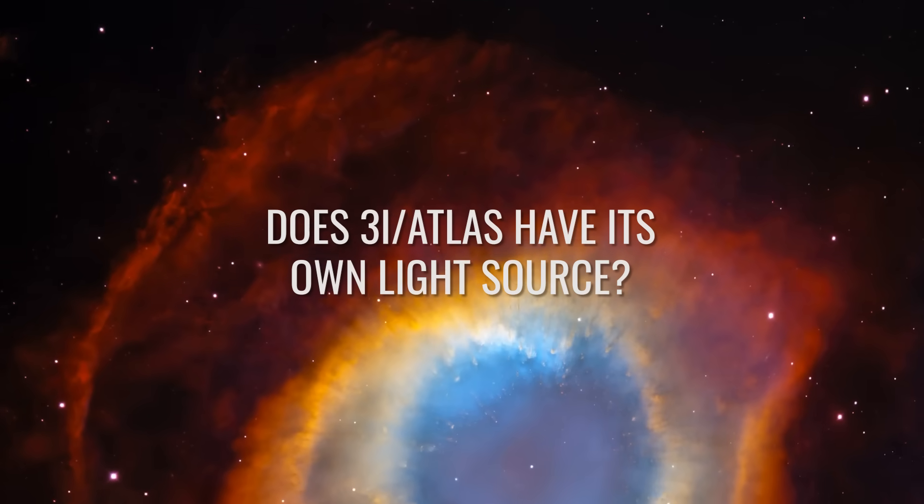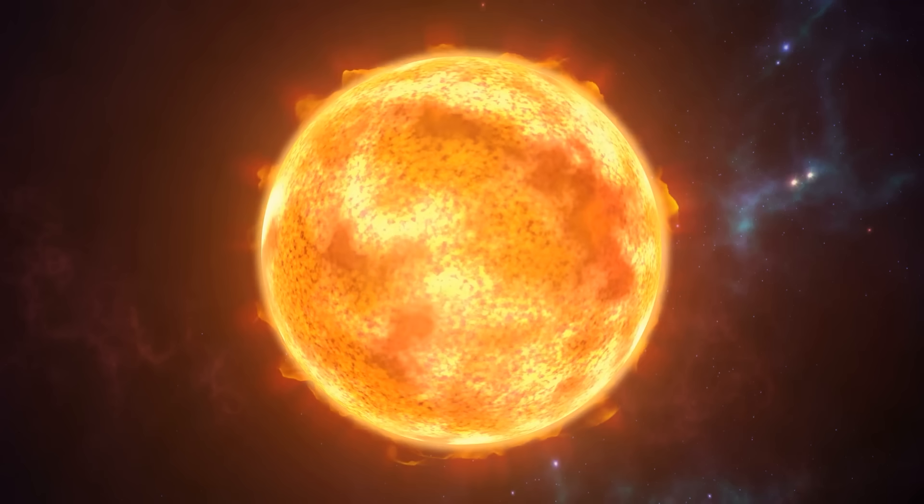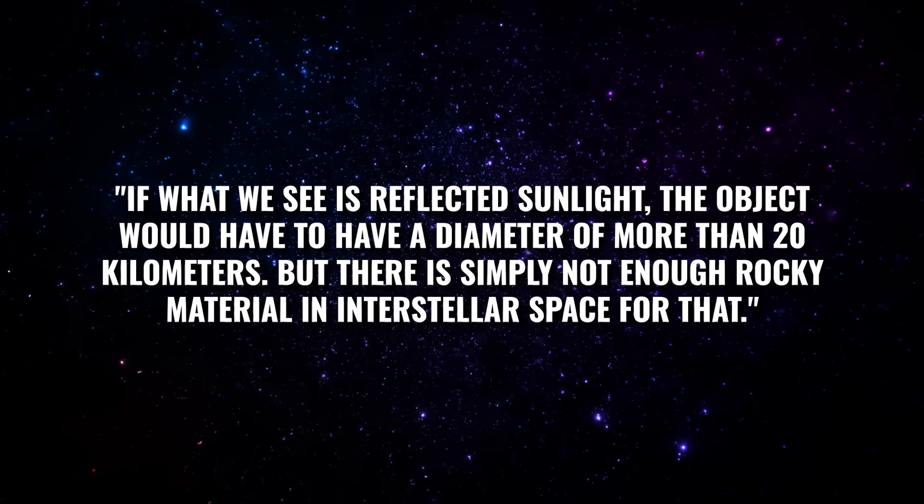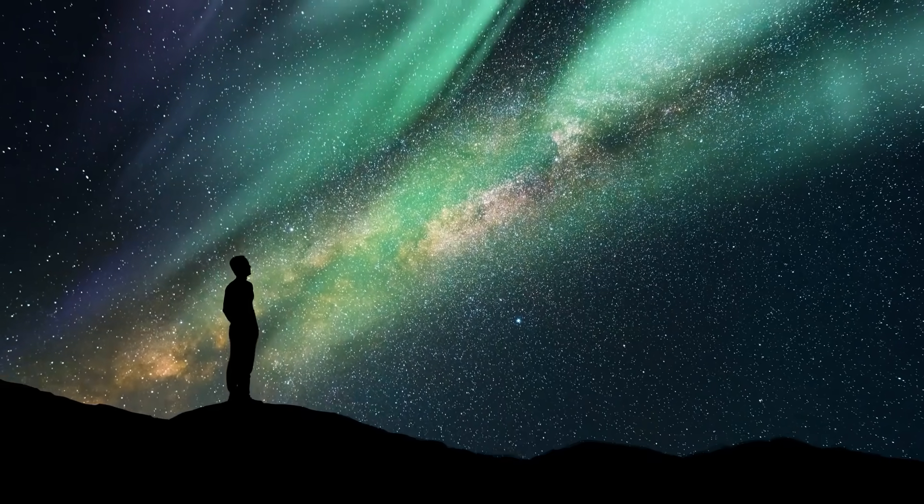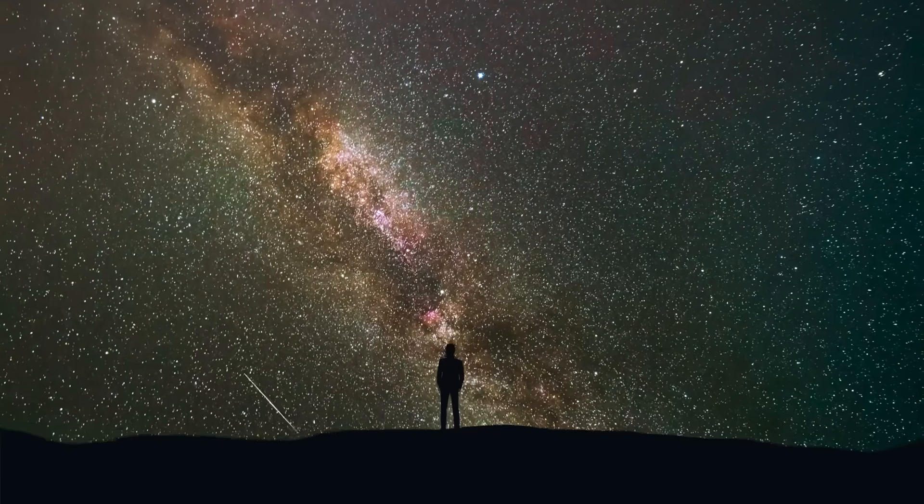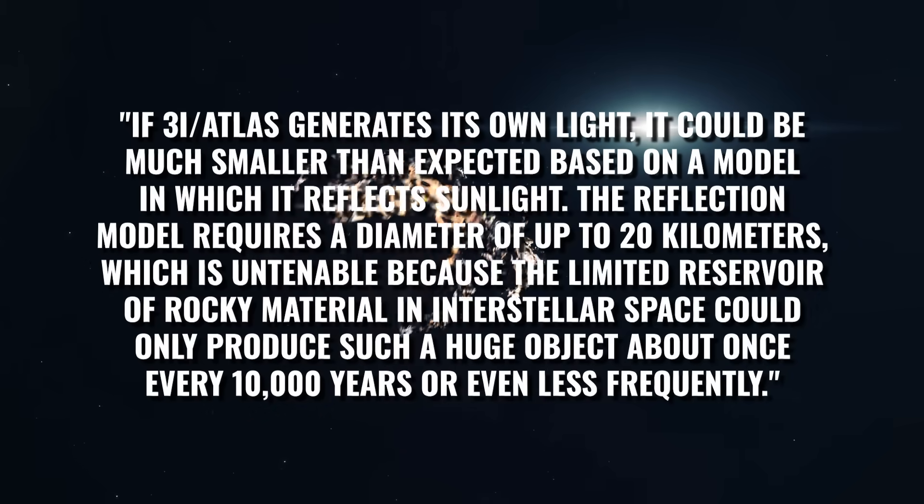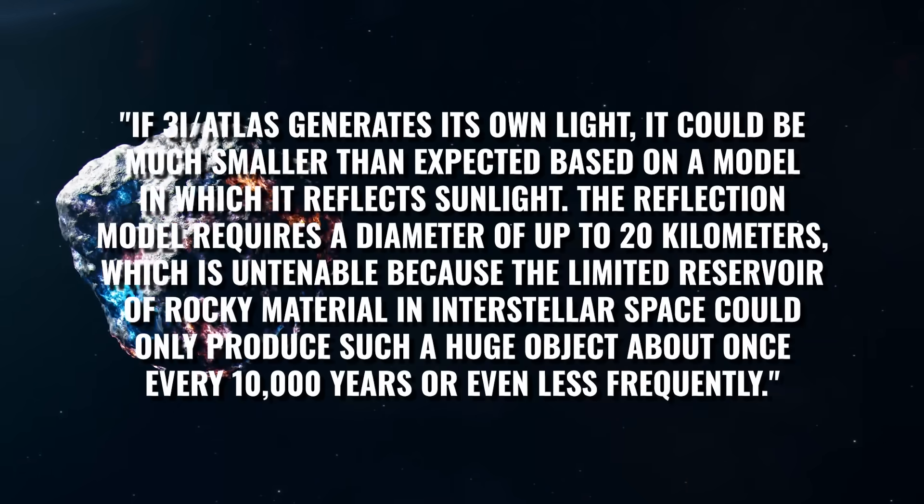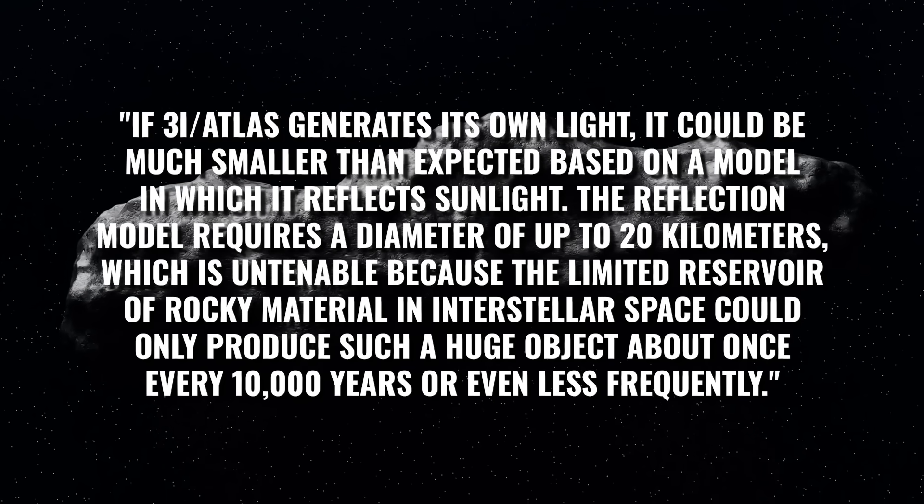Does 3i Atlas have its own light source? We have already shown you that Loeb is open to more alternative approaches, and regarding the light emitted by 3i Atlas, he explains that it is simply too strong to be just reflected sunlight. He says, if what we see is reflected sunlight, the object would have to have a diameter of more than 20 kilometers. But there is simply not enough rocky material in interstellar space for that. Loeb also refers to a glow at the front of the interstellar visitor, which other experts interpret as the evaporation of material on its sun-facing side. According to him, however, the observed brightness profile could be explained much better by internal processes. If 3i Atlas generates its own light, it could be much smaller than expected. The reflection model requires a diameter of up to 20 kilometers, which is untenable because the limited reservoir of rocky material in interstellar space could only produce such a huge object about once every 10,000 years or even less frequently.